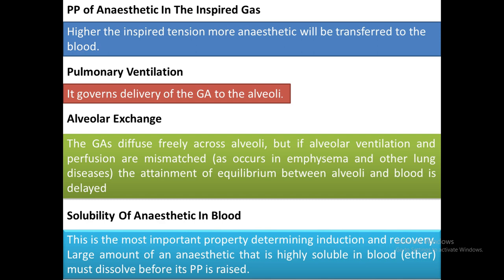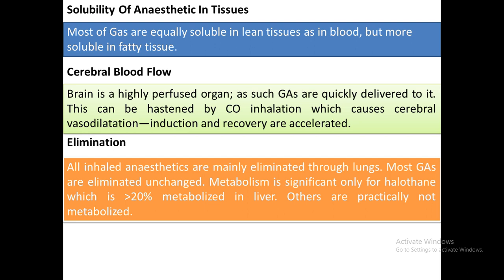Solubility of anesthetic in blood is the most important property determining induction and recovery. Large amounts of highly blood-soluble anesthetics must dissolve before partial pressure is raised. Most general anesthetics are equally soluble in lean tissue and blood but more soluble in fatty tissue. Brain, being a highly perfused organ, receives general anesthetics quickly. Co-inhalation causing cerebral vasodilation can hasten induction and recovery.